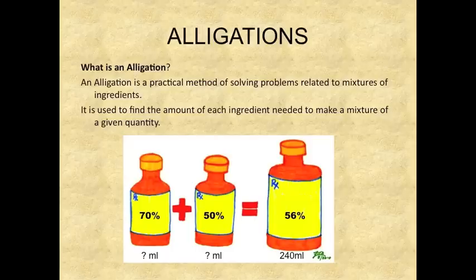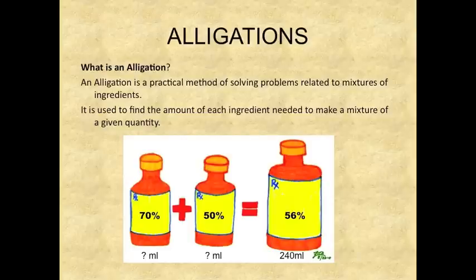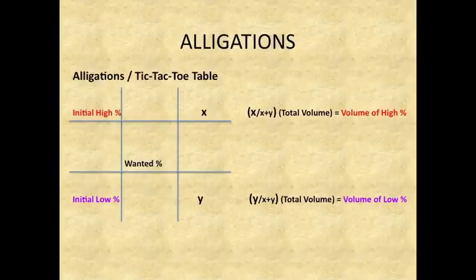What is an allegation? An allegation is a practical method of solving problems related to mixtures of ingredients. It is used to find the amount of each ingredient needed to make a mixture of a given quantity. This formula uses a table in the shape of the tic-tac-toe game.